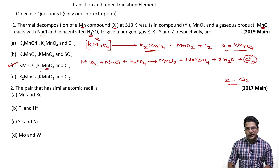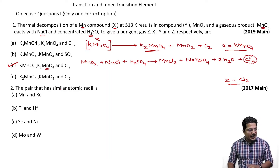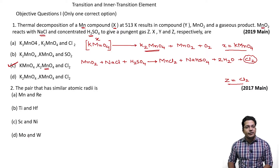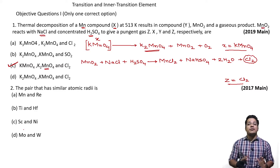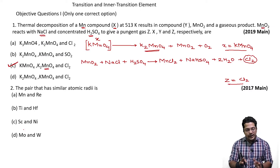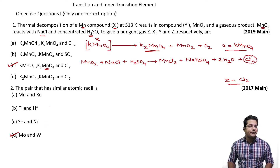The second question asks: which pair has similar atomic radii? The options are Mn and Re, Ti and Hf, Sc and Ni, or Mo and wolfram (W). This is a factual question — you must remember that molybdenum (Mo) and wolfram (W) have the same atomic radius. The correct answer is Mo and wolfram.